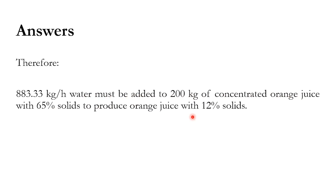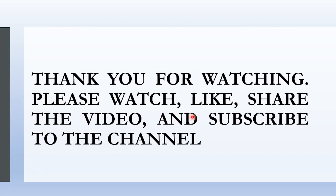To summarize: in case one we were given the product flow rate and applied a reverse balance to compute the feed. In case two we knew one of the feed streams, computed the product first, and then computed the other feed stream. That's it for this lecture — please like, share, subscribe, and click the bell icon for all updates. Stay tuned for more videos.